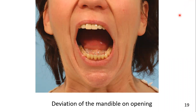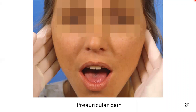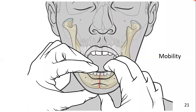Deviation of the mandible on opening usually indicates a fracture of the mandibular condyle on the deviation side. Pre-auricular pain may indicate a condylar process fracture or intraarticular hematoma. Mobility across tooth-bearing regions indicates a fracture. Keep in mind that any fracture passing through the tooth-bearing area is considered an open or compound fracture.